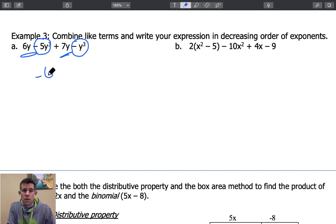So combining these, I end up with negative 6y cubed. A positive 6y and a positive 7y gives me positive 13y. I'm always going to try to write my new expression or my simplified expression in decreasing order of powers.